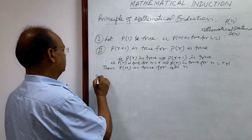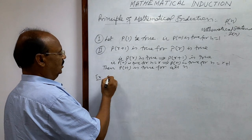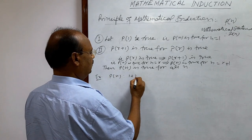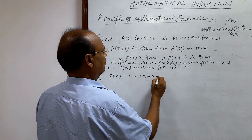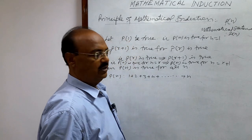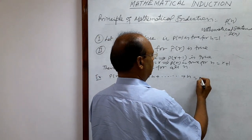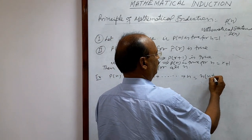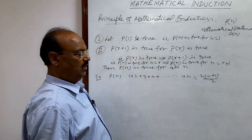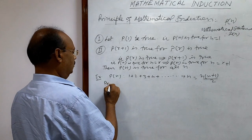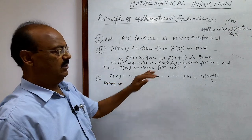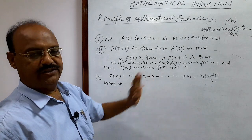Let us establish this principle with the help of a simple example. The statement P(n) is: 1 plus 2 plus 3 plus 4 plus up to n equals n into (n plus 1) divided by 2. This is the given statement and we have to prove, establish, and generalize it.